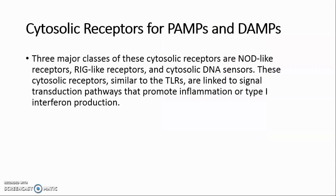There are three major classes of cytosolic receptors for PAMPs and DAMPs: NOD-like receptors, RIG-like receptors, and cytosolic DNA sensors. These cytosolic receptors, similar to the TLRs, are linked to signal transduction pathways that promote inflammation or type I interferon production.